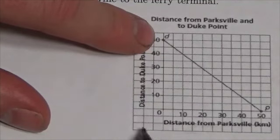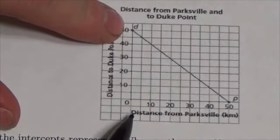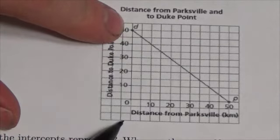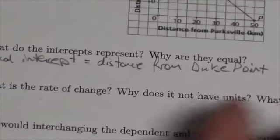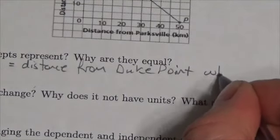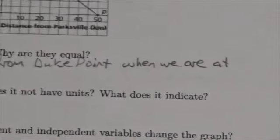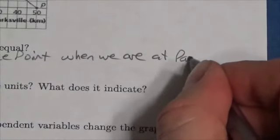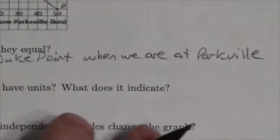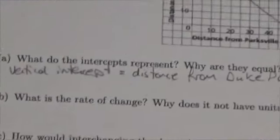Now, horizontally though, the x values refer to the distance that we are from Parksville. In this case, that distance is zero. So this is going to be the distance from Duke Point when we are at Parksville. And really all that's saying is that these two places are 50 kilometers apart.